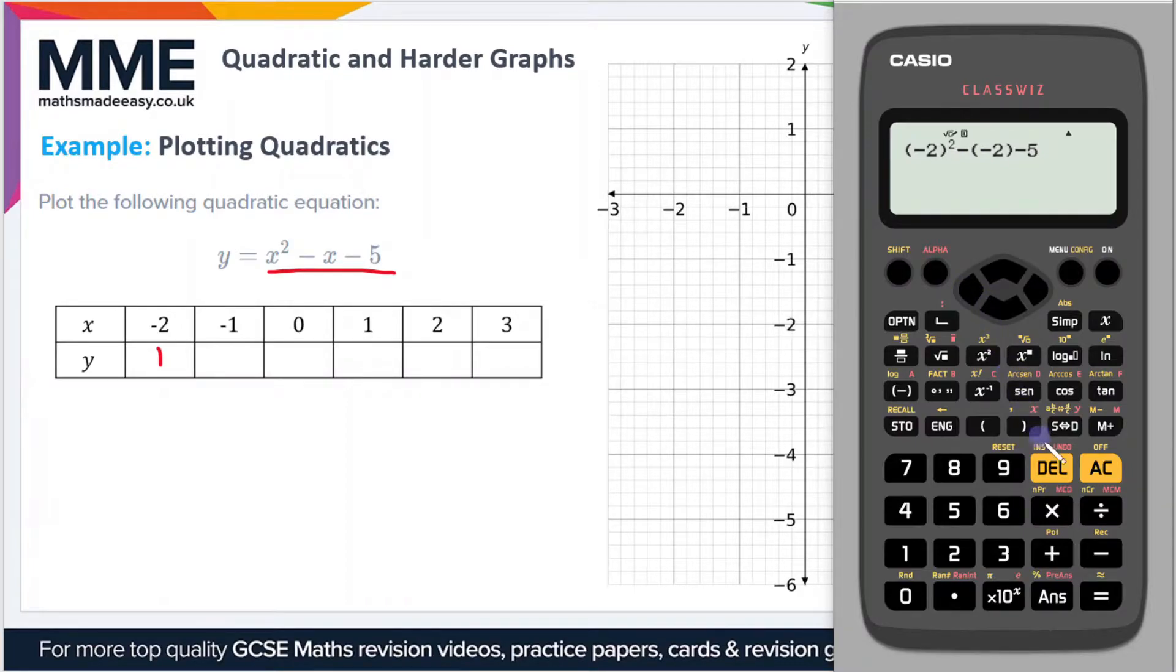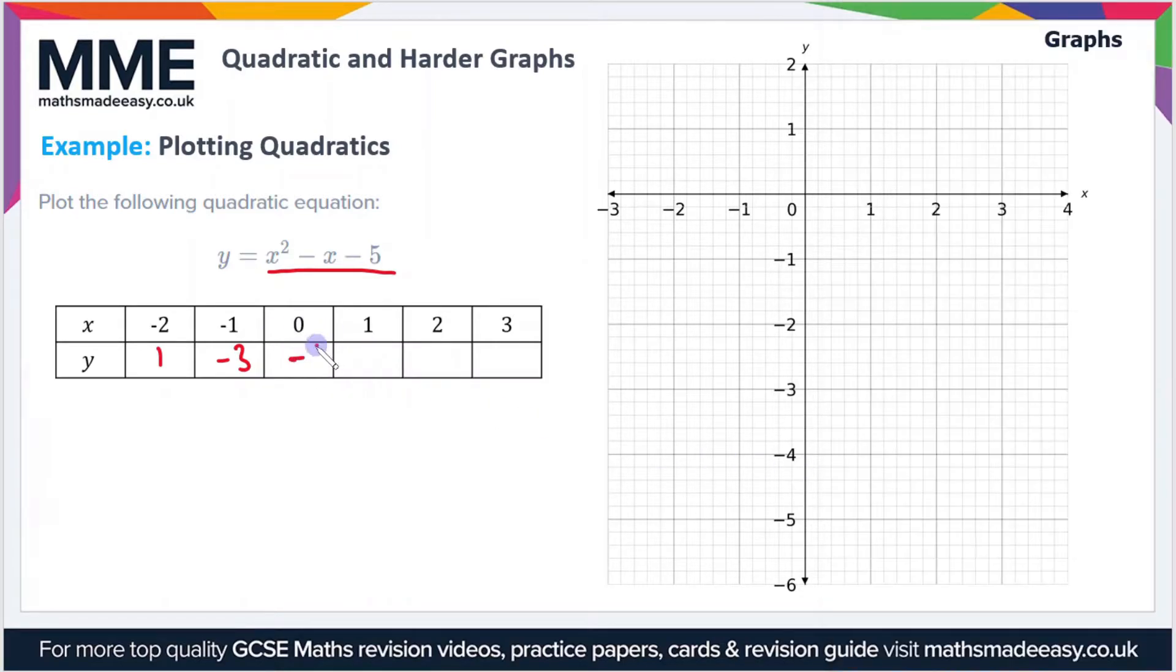So the next example is minus 1, and we do the same here, so that gives us our next y value of minus 3. And then we just plug 0 in, so you just repeat this process over and over again until you've got all the values of y that you need. So that gives us a value of minus 5.